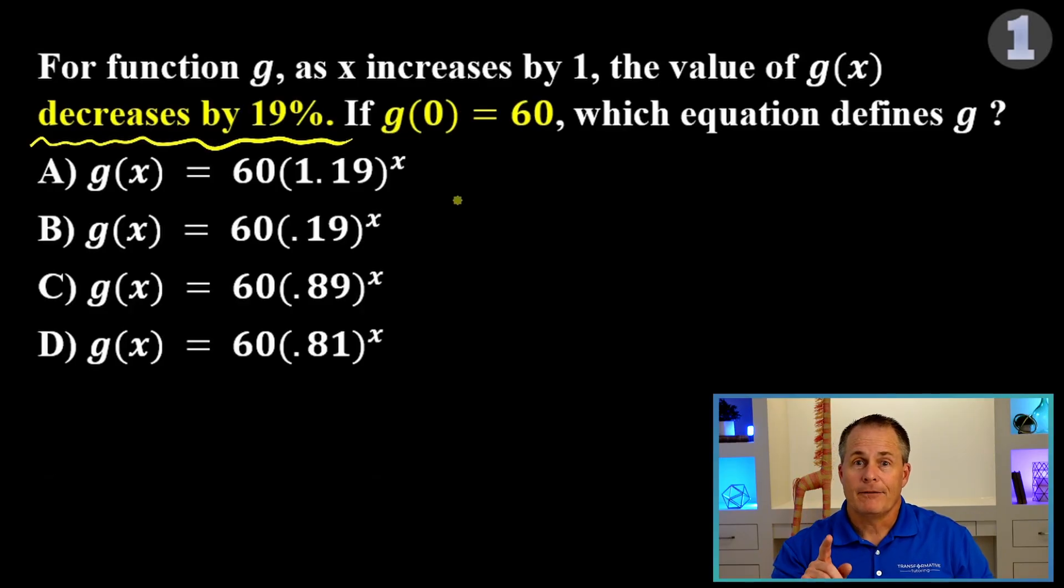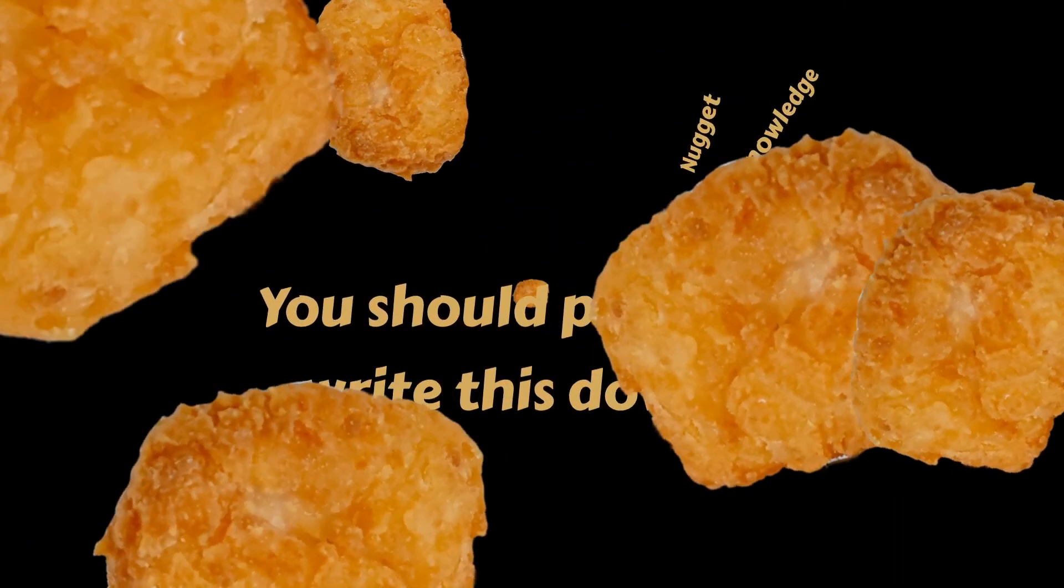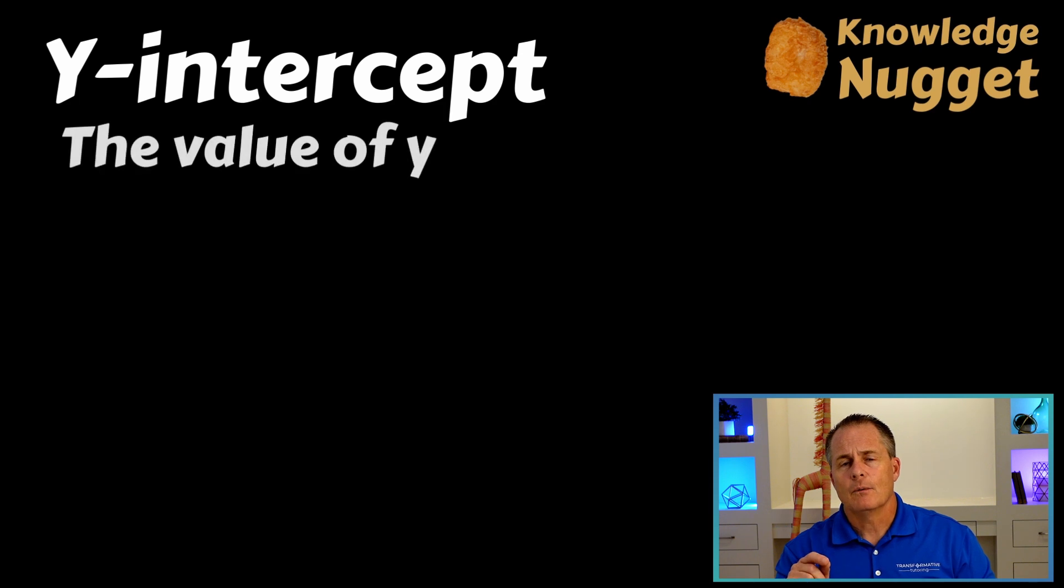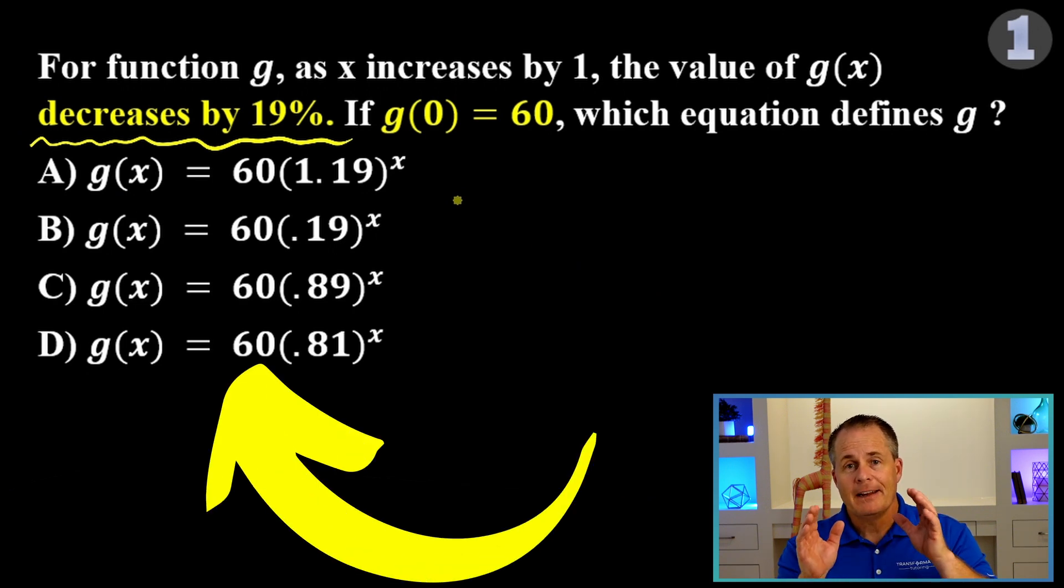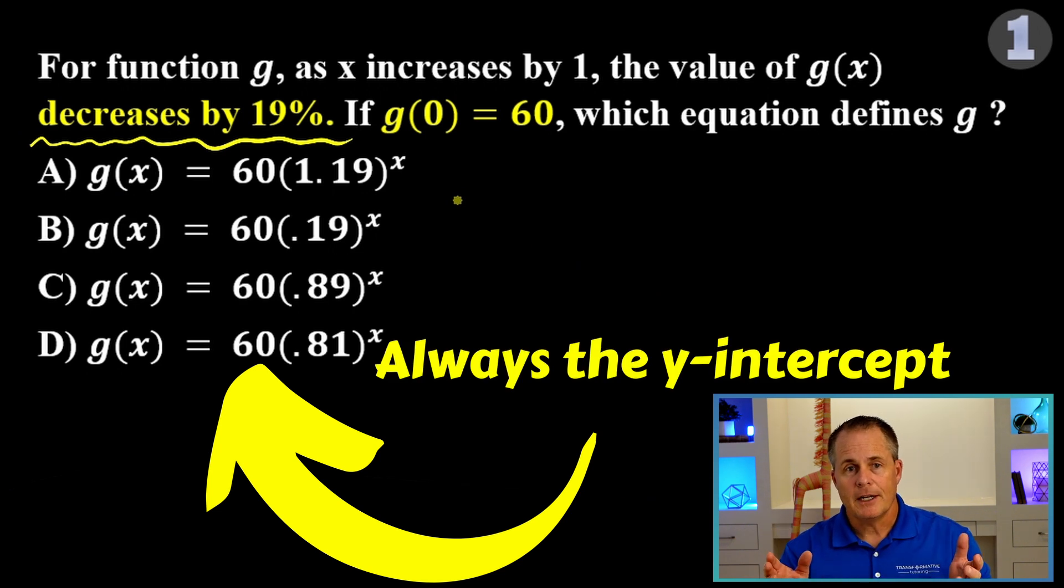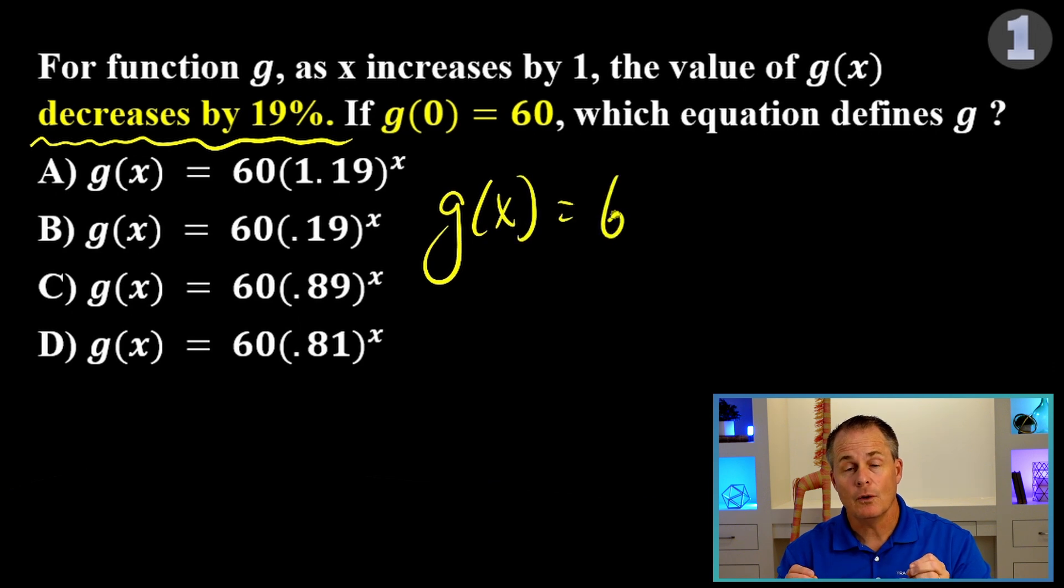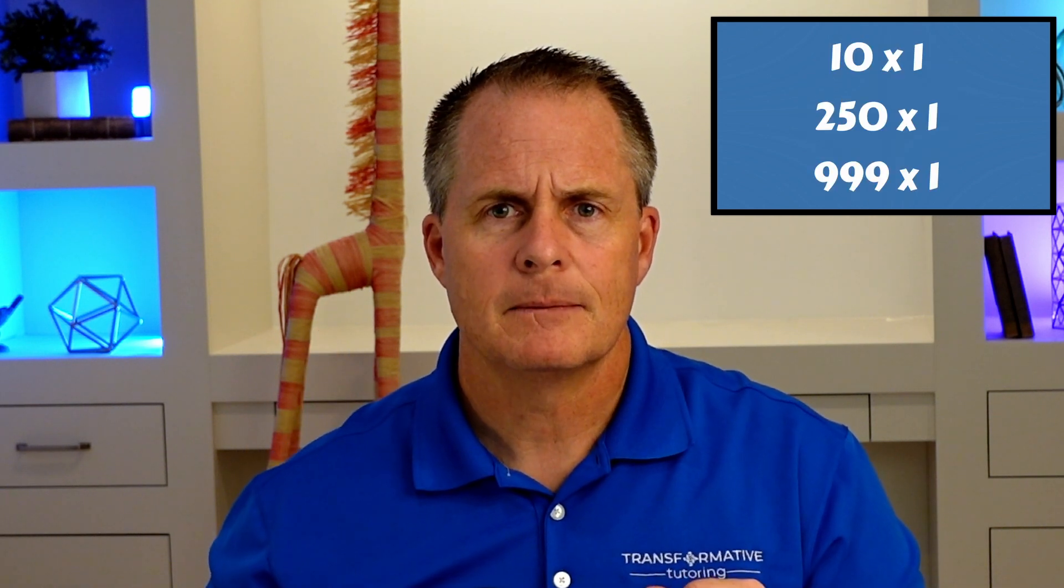First of all, it's important to review the basic format of an exponential function. You should probably write this down. When you're putting in 0 for x, we were actually finding the y-intercept, which is the starting value of the function. So, the multiplier in front is always the starting value. Then, if we want to change the starting value, we will be multiplying it by either 1 plus or 1 minus the percentage of increase or decrease.